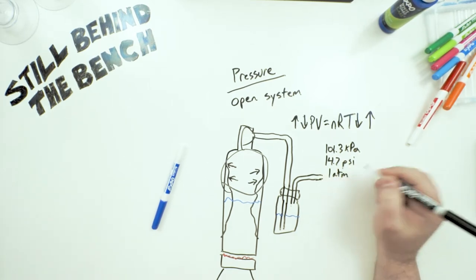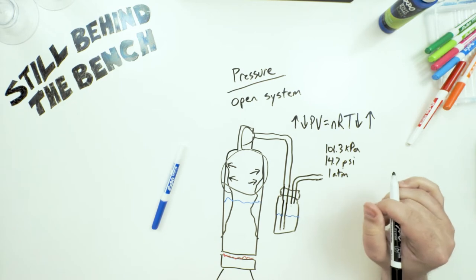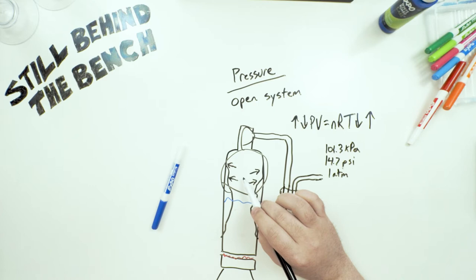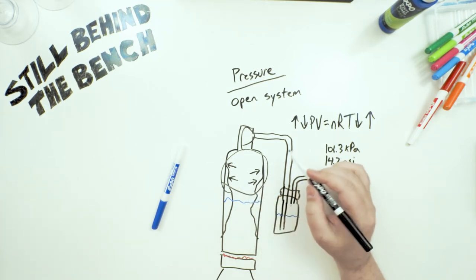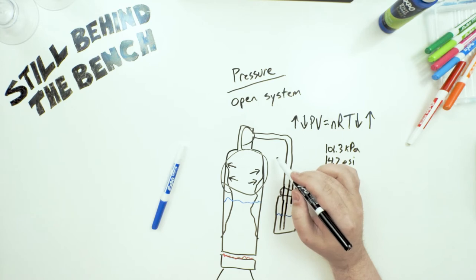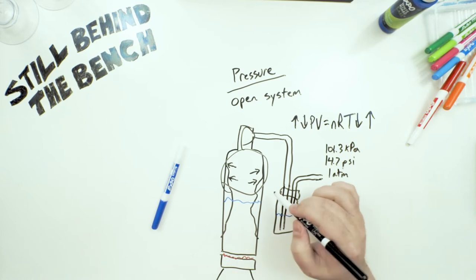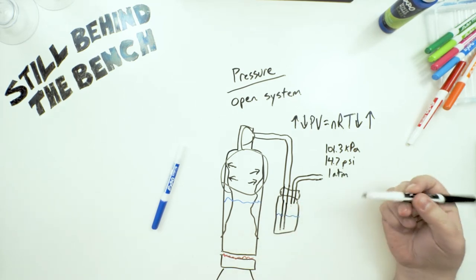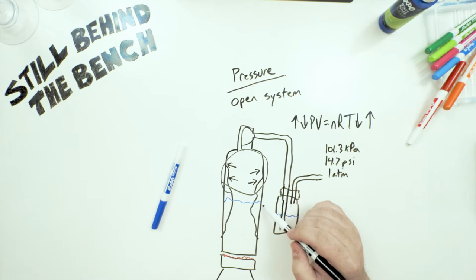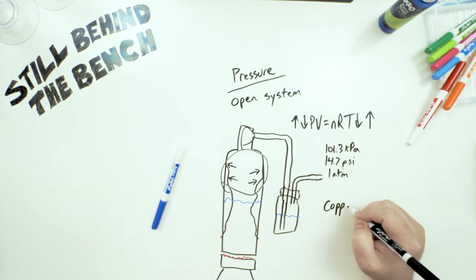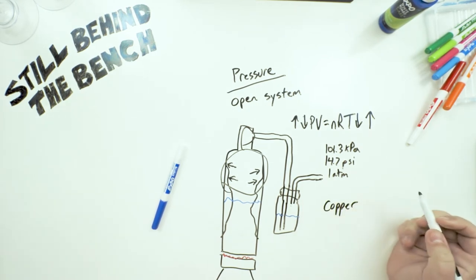It has to drop below atmospheric, which is 101.3 kilopascals, 14.7 psi, or just one atmosphere. The pressure in here inside would have dropped below 14.7 psi, below atmospheric. And at the same time, the amount of pressure on the outside pushing in would have had to overcome the strength of the metal.